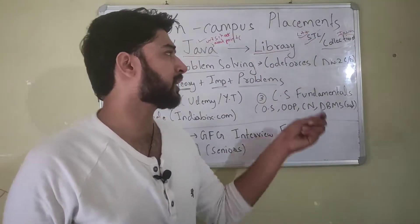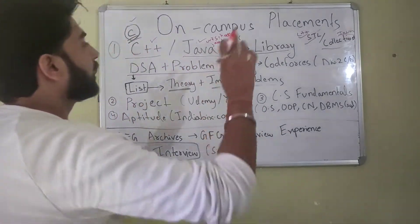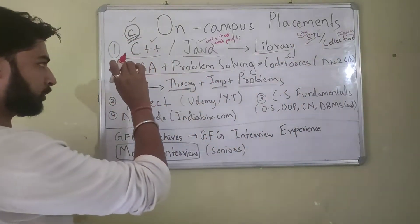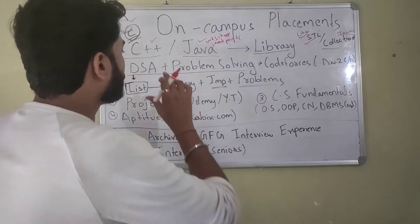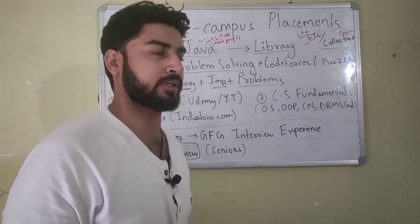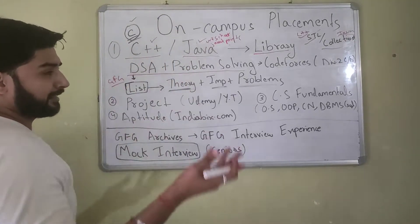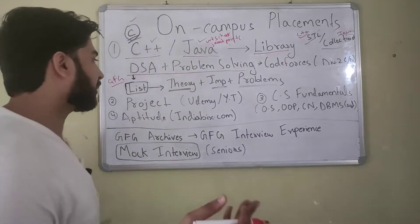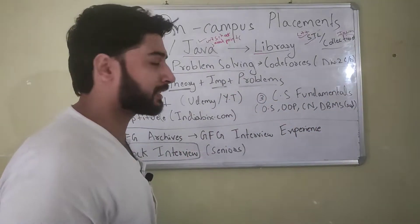I'll also give a link to helpful videos for learning C++ STL and Java Collections. Once you've learned the basic syntax and the library, next is DSA and problem solving. For DSA, first get a list of data structures and algorithms you're going to learn — you can find this list on GeeksForGeeks. It has a list of data structures and algorithms important for placement. You'll have a list something like Arrays, Strings, LinkedList, and so on.